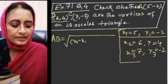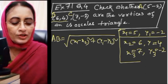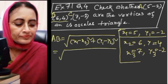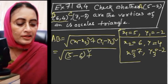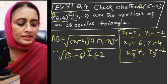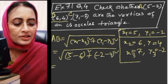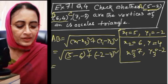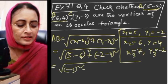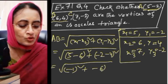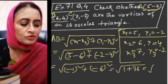AB = √[(x1 - x2)² + (y1 - y2)²] = √[(5 - 6)² + (-2 - 4)²] = √[(-1)² + (-6)²] = √[1 + 36] = √37.